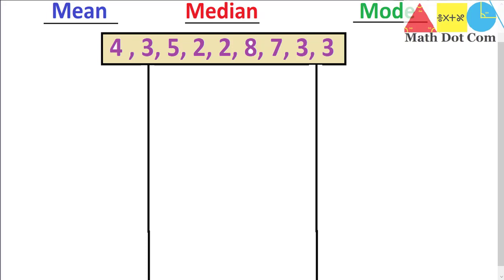We have to start with mean, median and mode because these are the basics of statistics that you should know how to find. Once you know how to find the mean, median and mode, you can easily make decisions based on the results. These are basically the measures of central tendency.